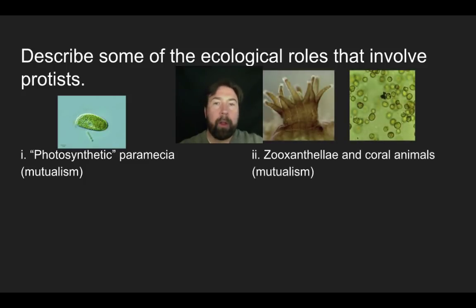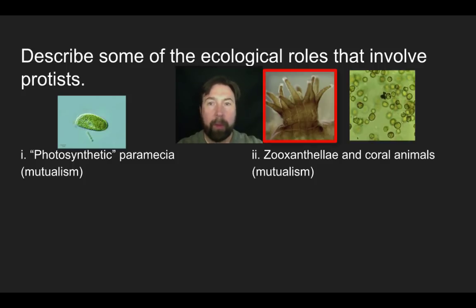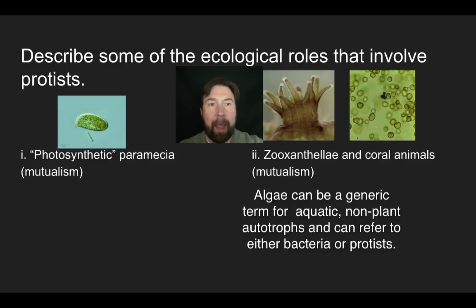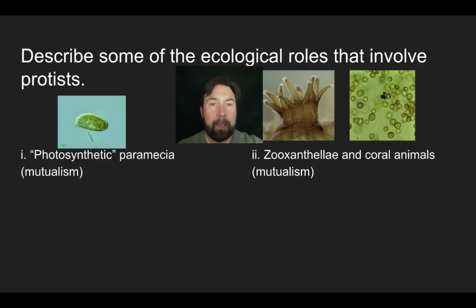Our second example is zooxanthellae and coral animals. The zooxanthellae is the protist, and the animal it forms a symbiotic relationship with is a coral. Inside the coral animal and its polyps, we see tiny photosynthetic cells. This is a really cool example of how photosynthetic algae are acting much like we think the first chloroplast would have behaved — a photosynthetic organism living inside another, developing a mutualistic relationship similar to endosymbiosis.